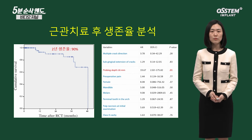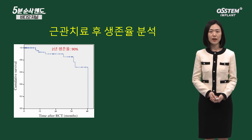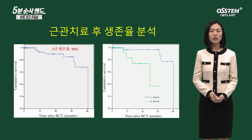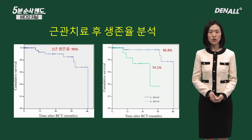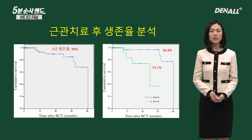The results showed that if PPD was over 6 mm, the survival rate was significantly lower. When PPD was less than 6 mm, the survival rate was 96.8%, and if it was above 6 mm, it was 74.1%.